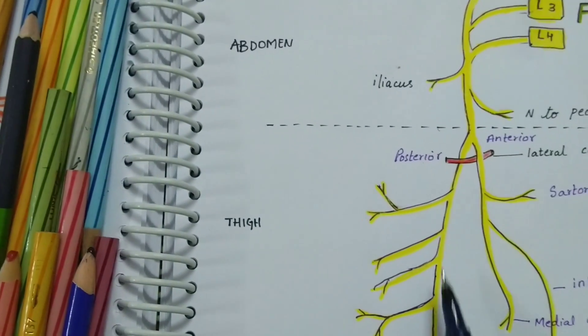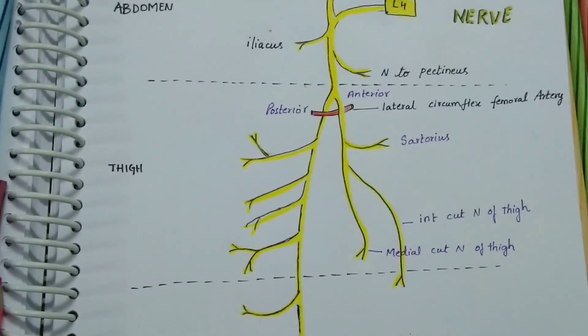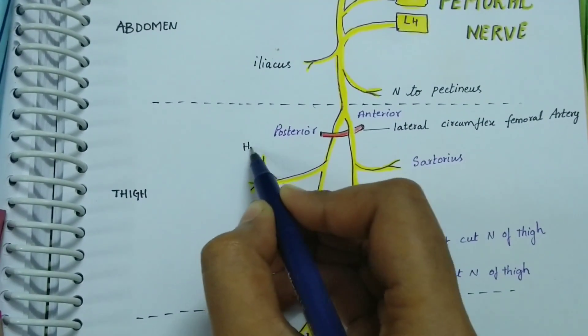The posterior division or the main trunk in the thigh gives branches to all the quadriceps muscles. This goes to hip joint.